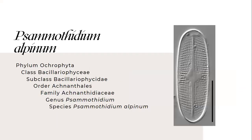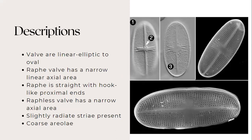So for the next species, it's called Achnanthidium alpinum from the family Achnanthidiaceae. For its descriptions, its valves are linear elliptic to oval in shape. And its raphe valve has a narrow linear axial area.